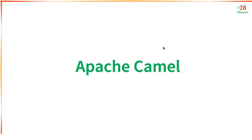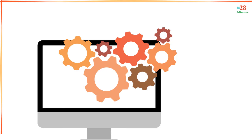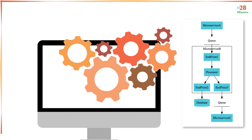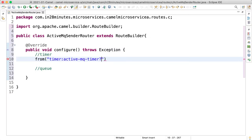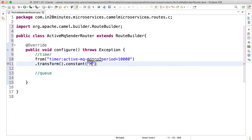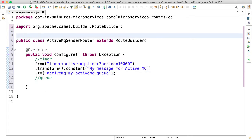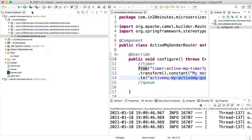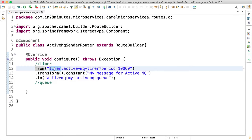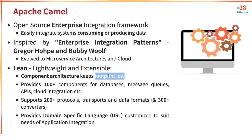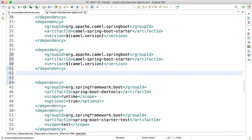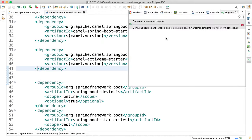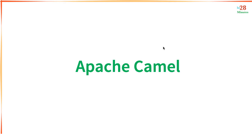In this course, you will learn the fundamentals of Camel — endpoints, routes, processors, transformations, and a lot more. You will learn how to use Camel to solve your enterprise integration problems. We will use a hands-on approach, integrating Apache Camel with Spring Boot, using a variety of Spring Boot starters to talk with queues like Kafka and Apache MQ, and we'll also play with different file systems. We expect you to have good knowledge of Java and Spring Boot. It's time to solve your enterprise integration problems using Camel!